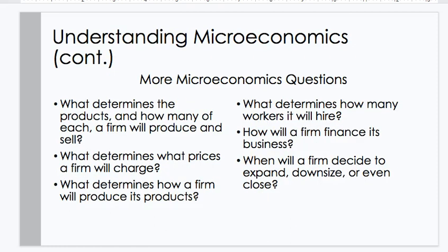Understanding microeconomics continued. More questions. What determines the products and how many of each a firm will produce and sell? What determines what prices a firm will charge? What determines how a firm will produce its products? What determines how many workers it will hire? How will a firm finance its business? When will a firm decide to expand, downsize, or even close?